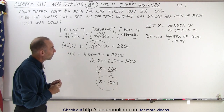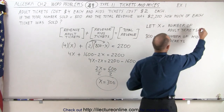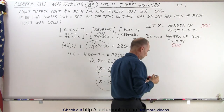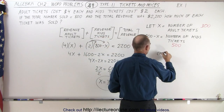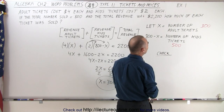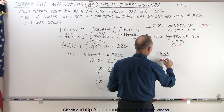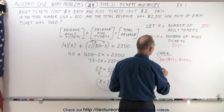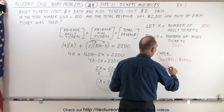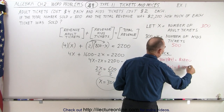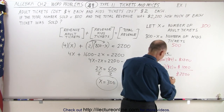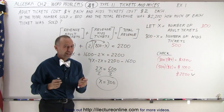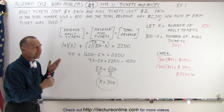Going back to our definition, x is the number of adult tickets, so we sold 300 adult tickets and 800 minus 300 equals 500 kids tickets. Let's check: 300 adult tickets times $4 equals $1,200, and 500 kids tickets times $2 equals $1,000. Together that's $2,200, which matches the problem. We did it correctly.